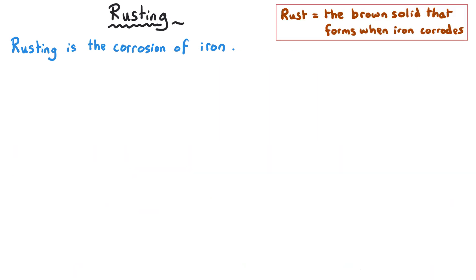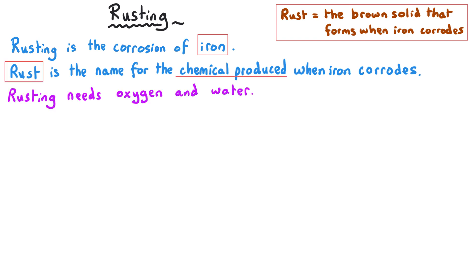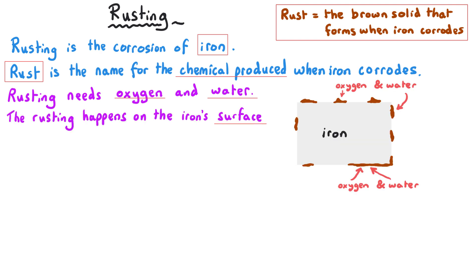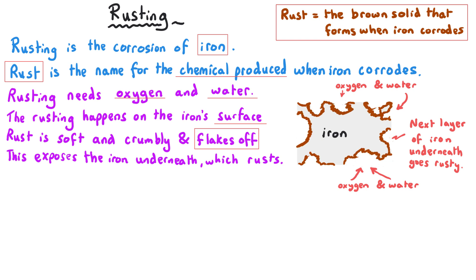Rusting is probably the most common example of corrosion, and rusting is a process that only occurs to iron. Rust is what forms once iron has corroded, and like all types of corrosion both oxygen and water are necessary. When rust occurs it's really soft and crumbly and it flakes off, which means more iron from underneath is exposed and will rust again, so eventually all of the iron in an object can corrode away.